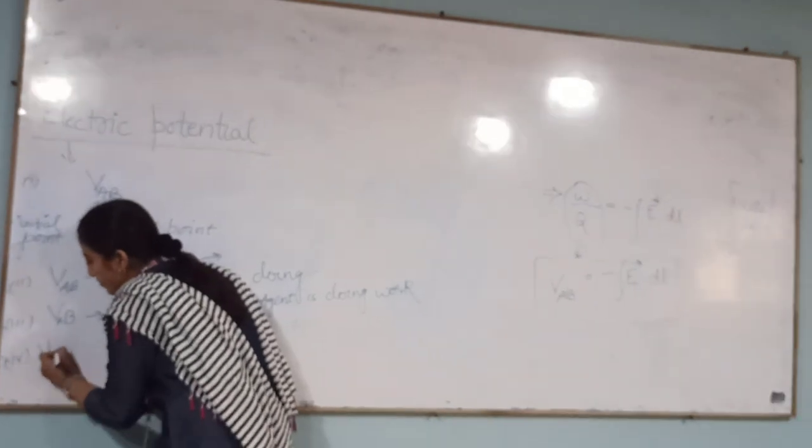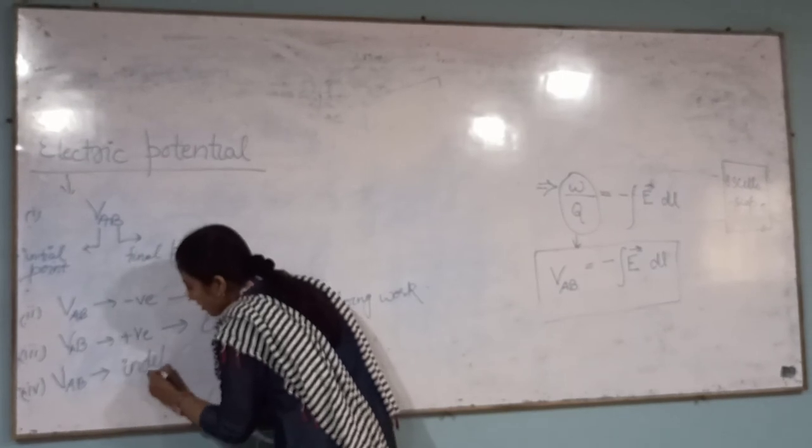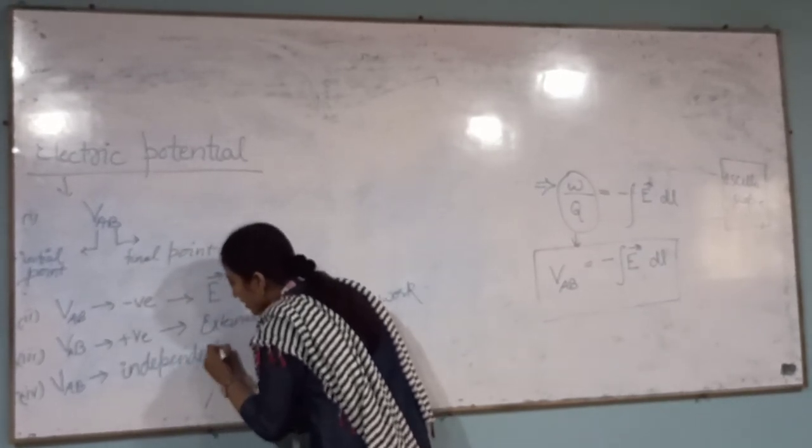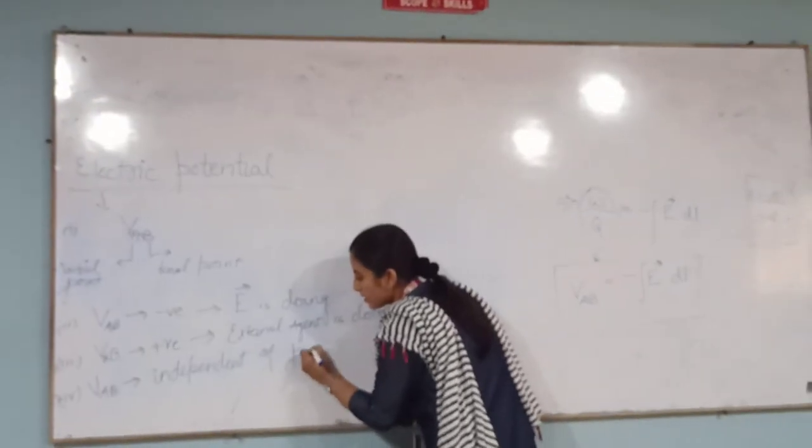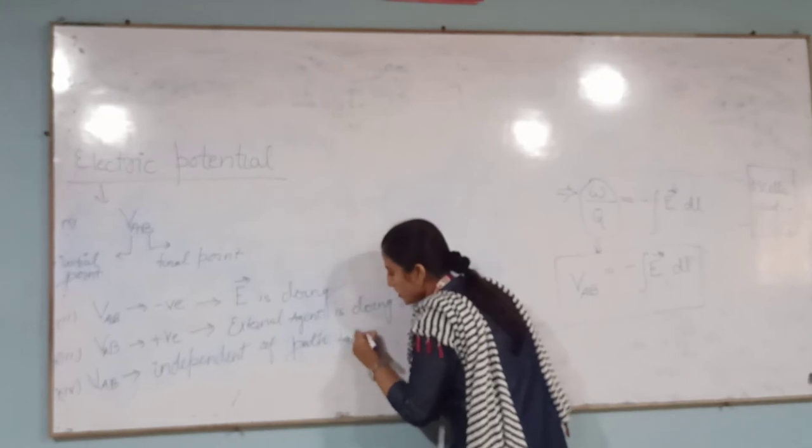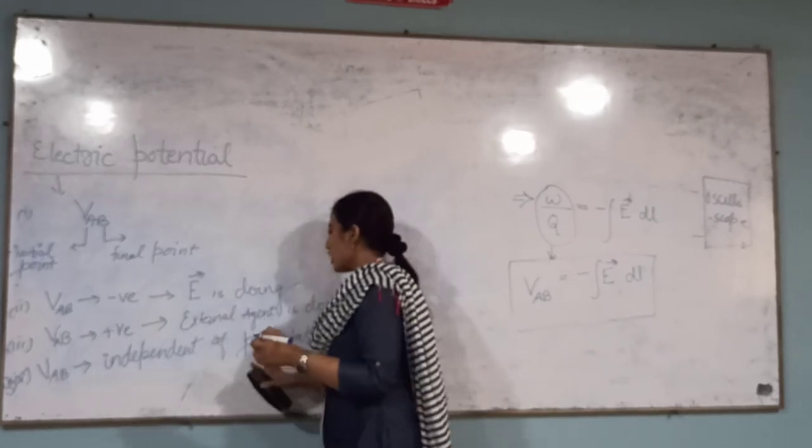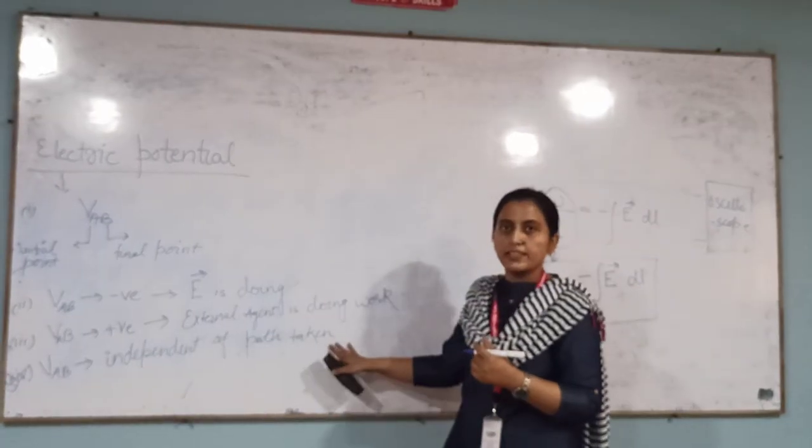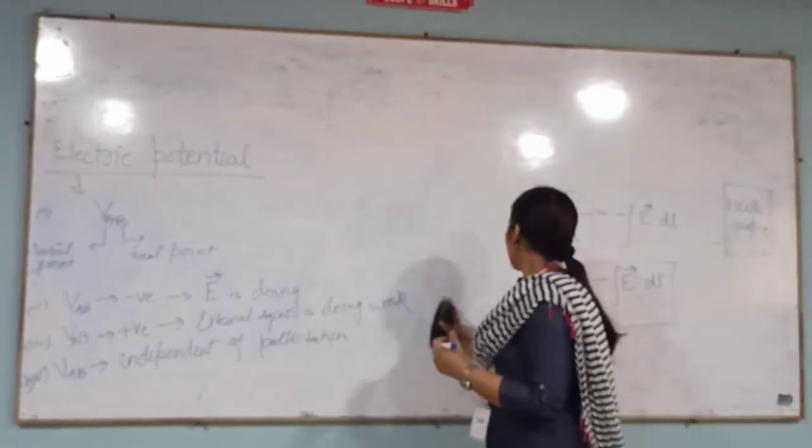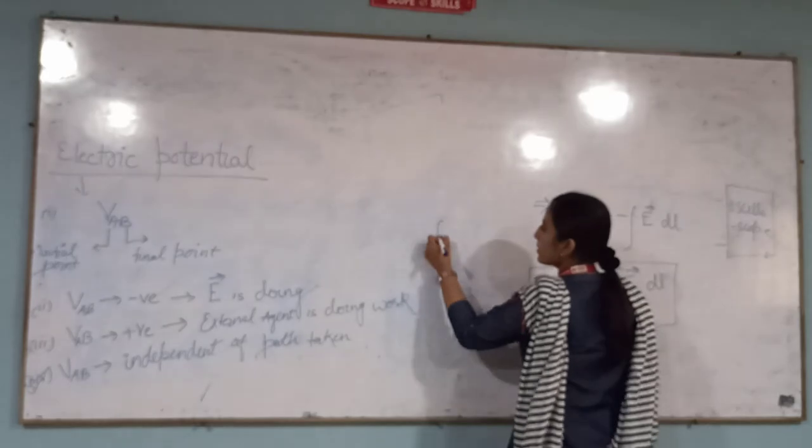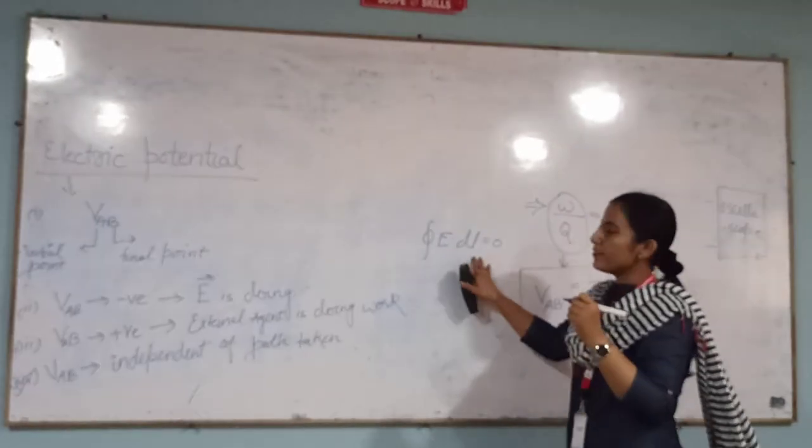And most important point, this V of AB is independent of path taken. So this is very important. How is it important? It does not depend on path taken. Considering this, we can derive Maxwell's second equation. That is, closed integral E dot dl equals to 0. And I will derive this also. Thank you.